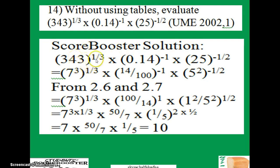We have 343 times 10 raised to power 3. What we're going to do here is find the factor of 343, which gives us 7 raised to power 3. Change this one from decimals to numbers: 14/100. Find the factor of 25, which is 5 raised to power 2.